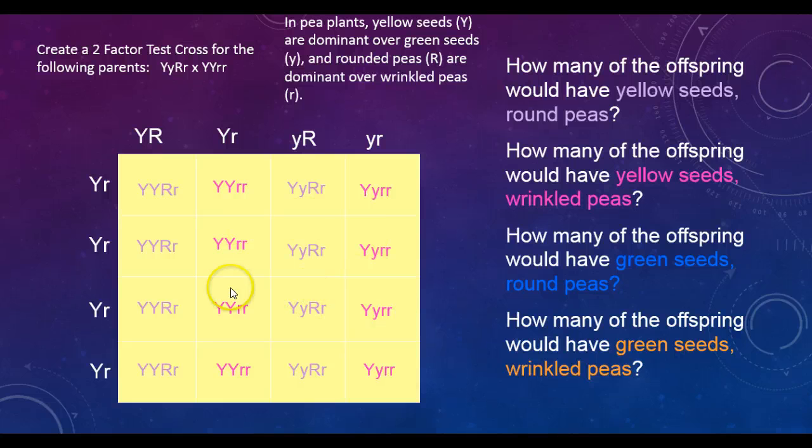We have all our outcomes here, all our possible outcomes. How many of the offspring would have yellow seeds and round peas? In order to have yellow seeds and round peas, you would need a capital Y and a capital R. All these in light purple have at least one capital Y and one capital R and would be yellow seeds and round peas. There's eight out of 16. That's 50% of our outcomes would have yellow seeds and round peas.